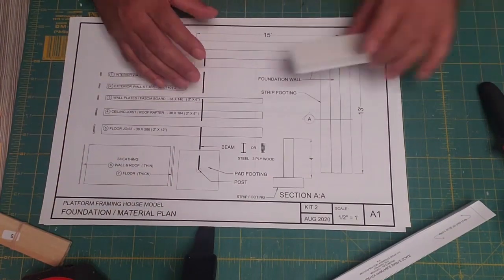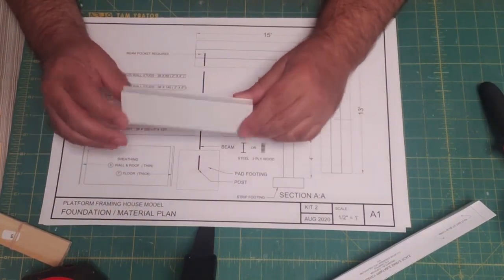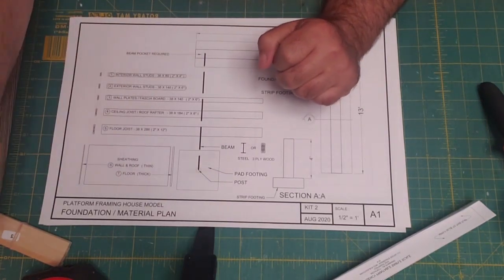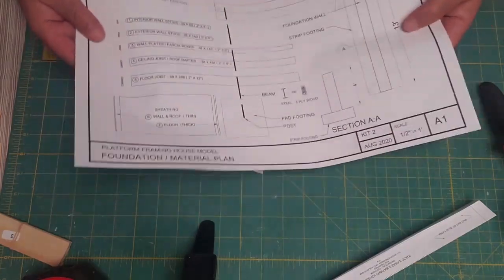All right, we also have a series of white foam pieces. These are going to form the foundation blocks. We're going to look at that in the next video. A few other things you're going to need.